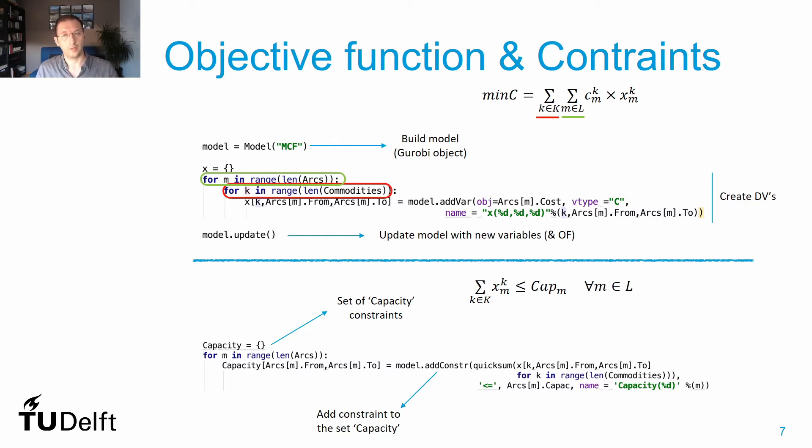This is done by going through a loop of arcs and a loop of commodities. I have a summation of arcs in my objective function formulation, so I have a for loop in my code. I have a summation of commodities k, so I have a for loop in my code. And then I have the cost value cmk, and this goes to the parameter object in my decision variable definition. I can give a name, I can define the type of decision variable I'm dealing with, and this information goes to Gurobi once I write model.update.